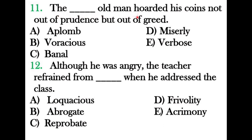Fill in the blank: 'The ___ old man hoarded his coins not out of prudence but out of greed.' Aplomb means self-confidence, voracious means greedy, banal means having lost effectiveness through overuse, miserly means close-fisted, and verbose means using many words. The correct answer is 'voracious' — the old man was greedy.